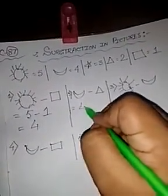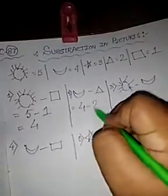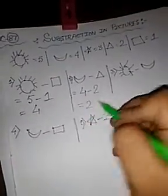Now moon, moon 4 minus triangle, triangle 2, so 4 minus 2 equals to 2.